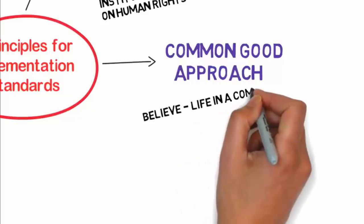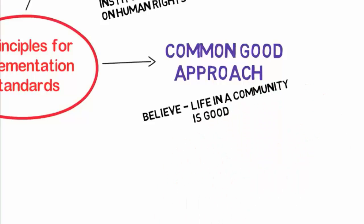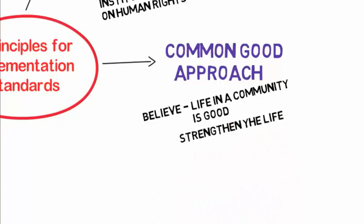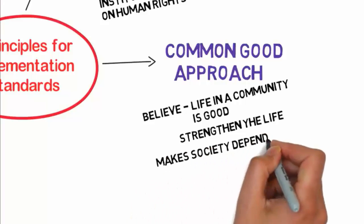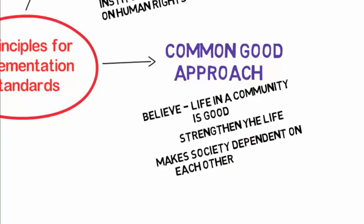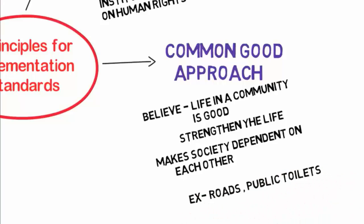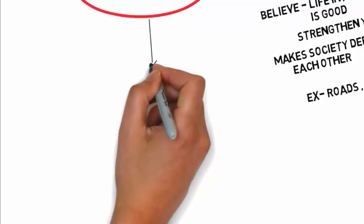The third one is the common good approach. This approach believes that life in a community is a very good life. Every effort should be made to strengthen life in the community so the members of the community and society become more dependent on each other. For example, construction of public utilities like roads, community centers, and public toilets.